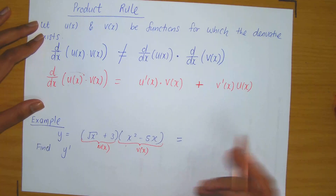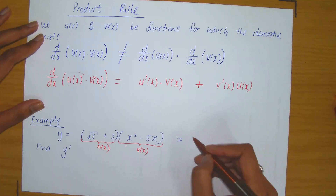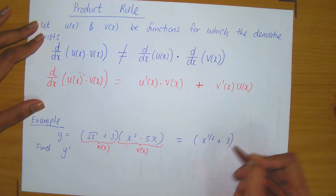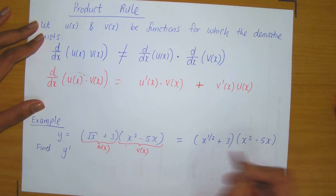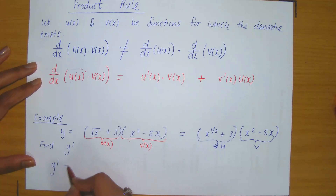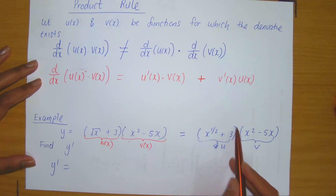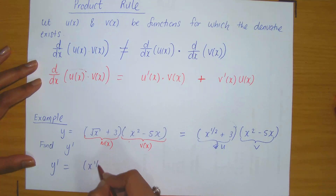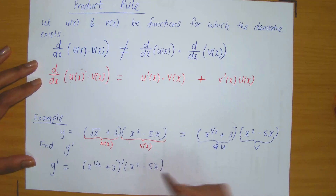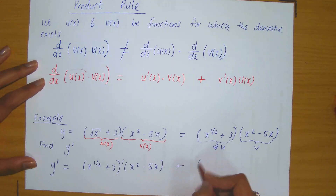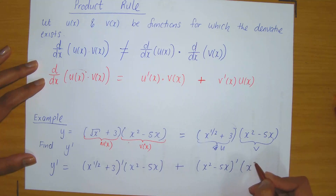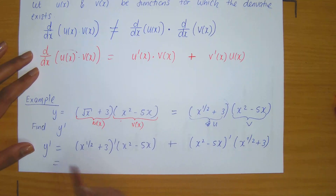Before you proceed, we have a radical here — root x. Always rewrite your radicals in terms of exponents: root x can be expressed as x to the power of one half. So u is x to the power of one half plus 3, and v is x squared minus 5x. Proceeding to compute y prime, we know that y prime equals the derivative of u — written as (x to the half plus 3) prime — times v, which is x squared minus 5x, added to v prime, which is the derivative of x squared minus 5x, multiplied to u.